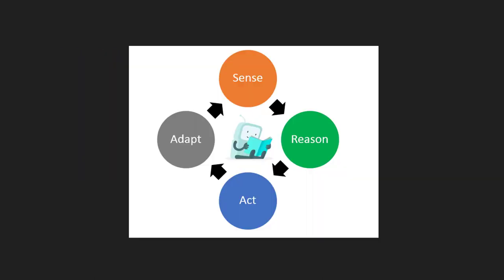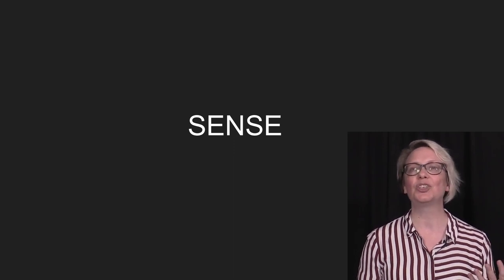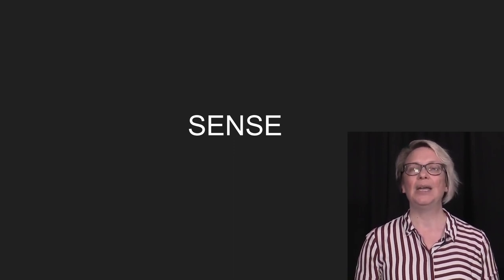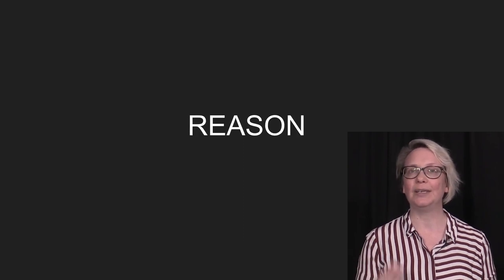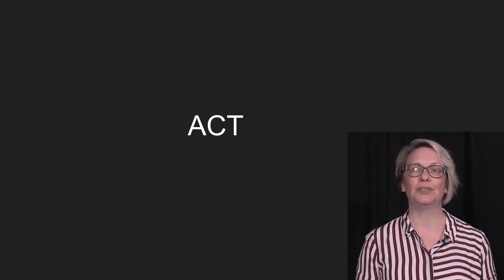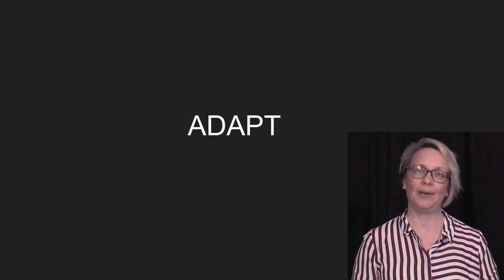Let's think about this — what do we mean by human intelligence? What makes us intelligent as humans? As humans we can sense; we use our senses, we can hear, feel, touch, see and smell. We have the ability to make decisions based on information we receive. We perform an action based on the decision we make, and we can adapt and learn from the results of our actions.